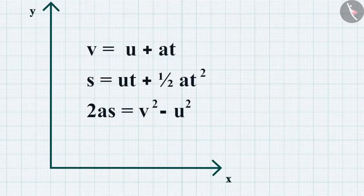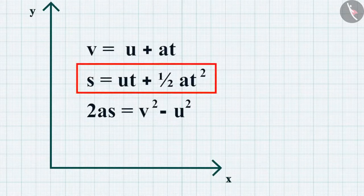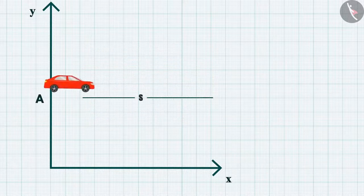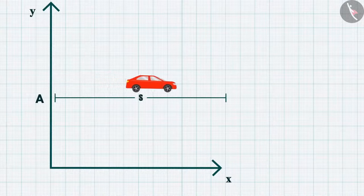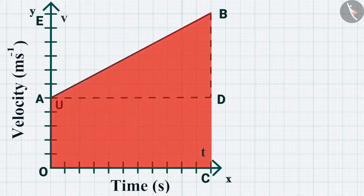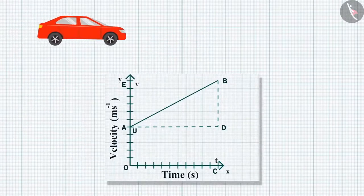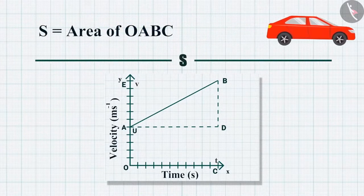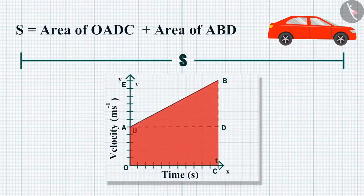Now let us derive the second equation — the position-time relation. A car has traveled a distance S with uniform acceleration A in time T. The distance S can be obtained from the enclosed area O, A, B, C in the graph. S equals the area of rectangle O, A, D, C plus the area of triangle A, B, D.